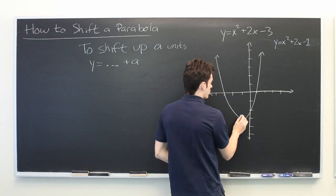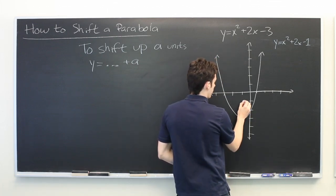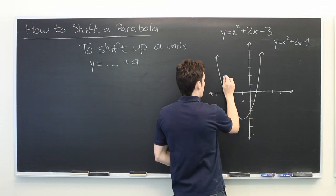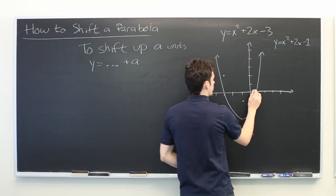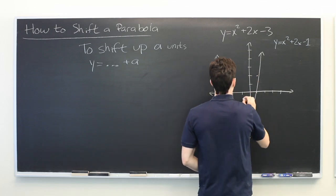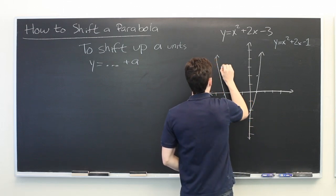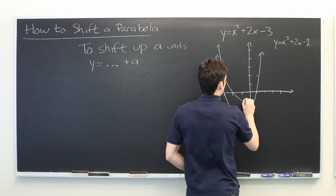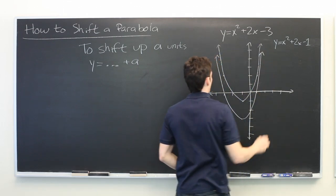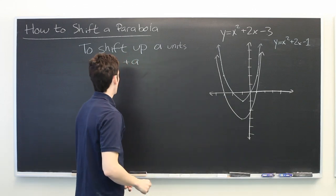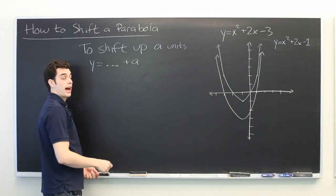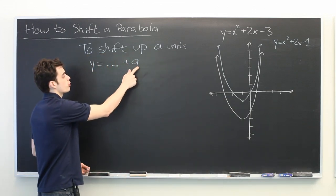The graph of that, we'll take the vertex, shift that up by 2. Take our x-intercepts, shift those up by 2. And there we go. Similarly, if you want to shift down by a units, you simply subtract a from the end.